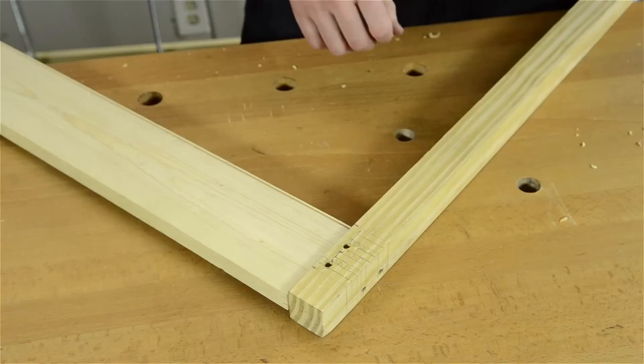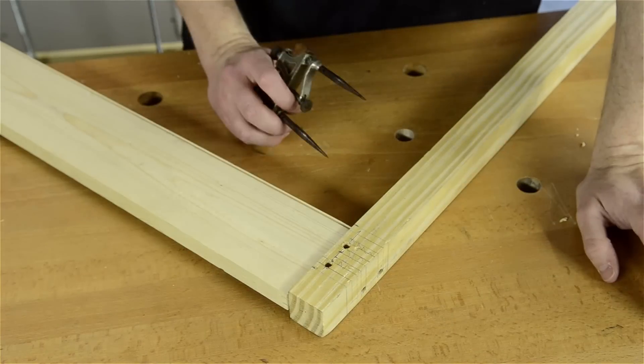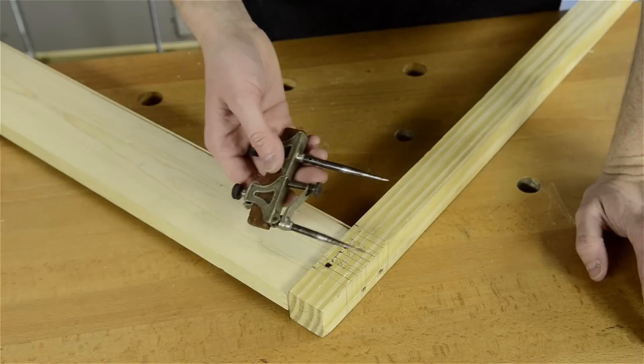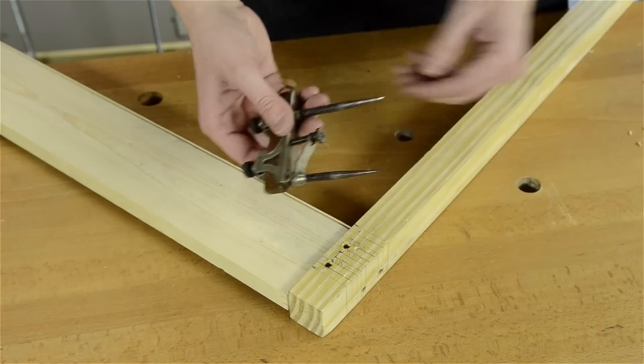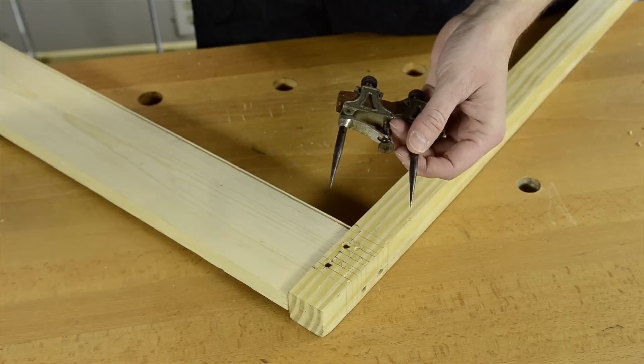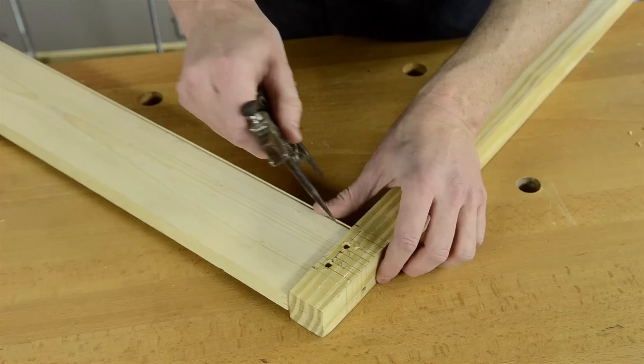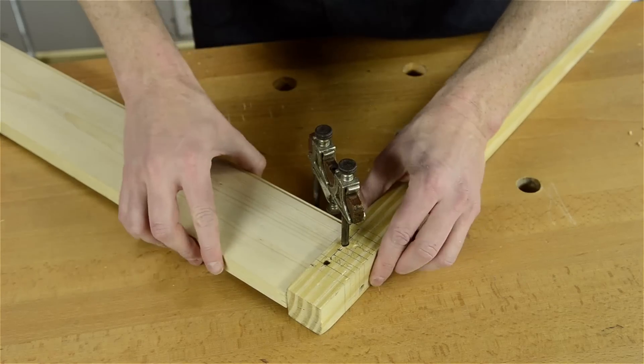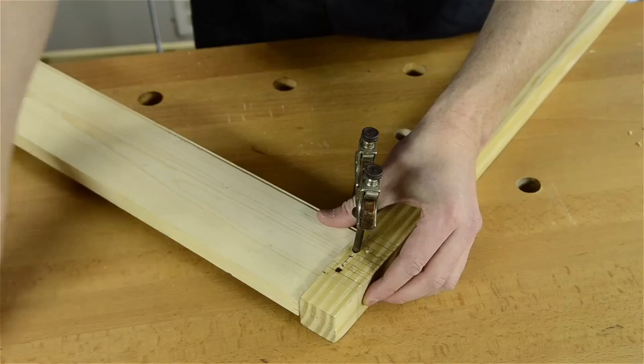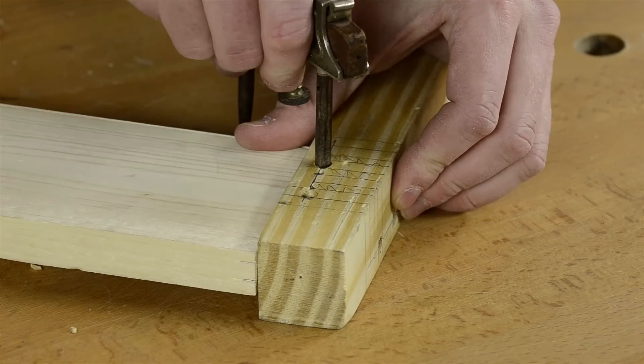Now the next step is you can either spend a lot of money for some draw boring pins, which they may work better, but I actually really like to use some trammel points. You can see they're really nice and smooth, and what you're doing is you're kind of greasing the tracks there. You're making it a little easier for these pins to be able to go through that little offset.